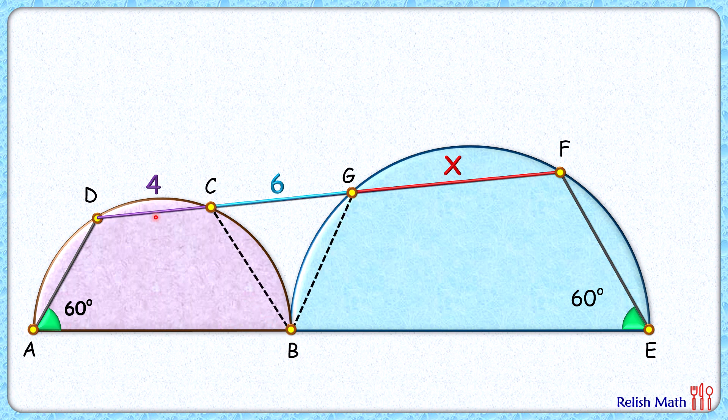Now A, B, C, D is a cyclic quadrilateral. By theorem, opposite angles will be supplementary, or this angle here will be 120 degrees. Same logic, this angle here will be 120 degrees.